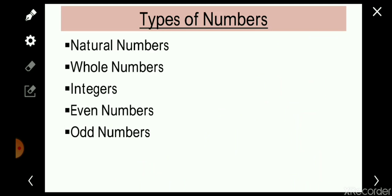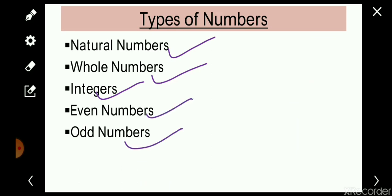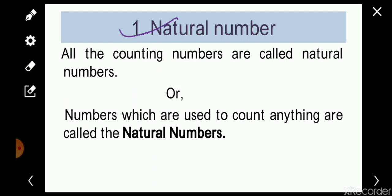Now we will talk about the types of numbers. In this chapter we will talk about natural numbers, whole numbers, integers, even numbers, and odd numbers. Many more types exist — like prime numbers, composite numbers, co-prime numbers — but in this chapter we will focus on these types.